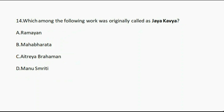Question number fourteen: Which among the following works was originally called Jayakavya? Option A: Ramayana. Option B: Mahabharata. Option C: Aitareya Brahmana. Option D: Manusmriti. And the correct answer is option B, Mahabharata.